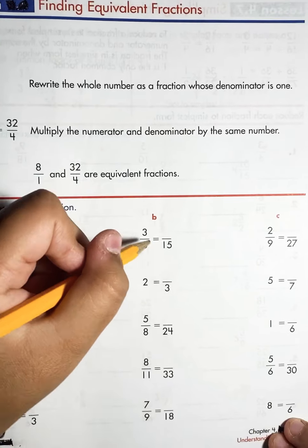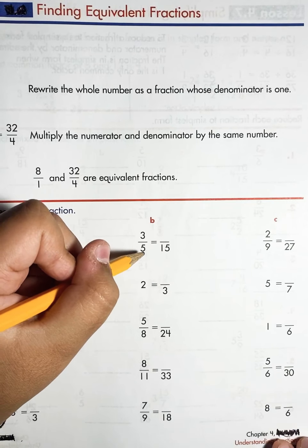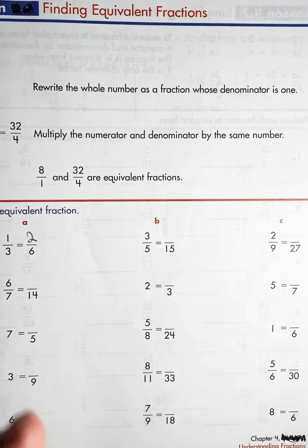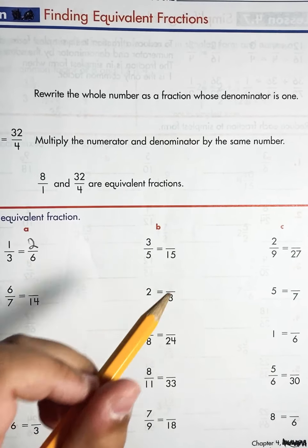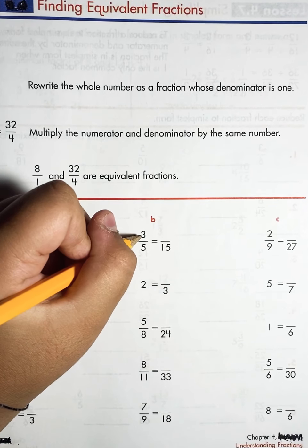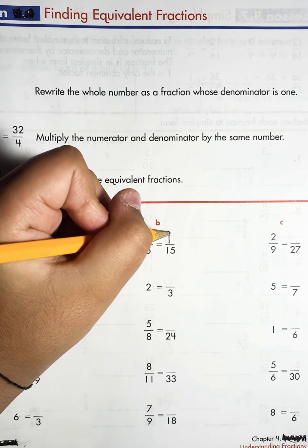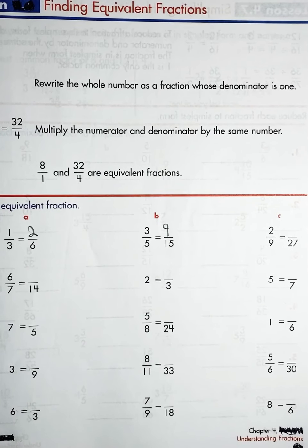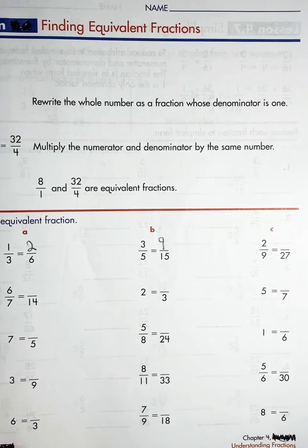Now to the next one over here. Three fifths equal to blank fifteen. Five times blank equals fifteen. So five times three equals fifteen. Now we have to do the three. Three times three equals nine.